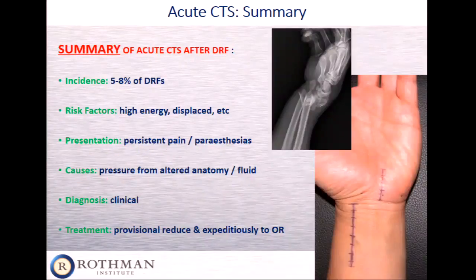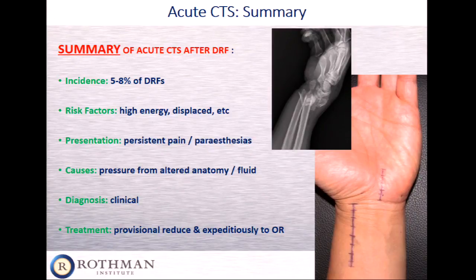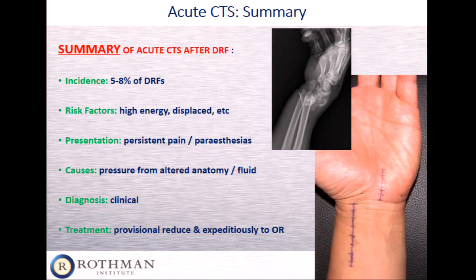In summary: acute carpal tunnel syndrome in the setting of a distal radius fracture has an incidence of about 5% to 8%. Risk factors include higher energy injuries and greater displacement. Presentation is like carpal tunnel syndrome but more painful and more progressive in the same distribution. Causes are ultimately pressure — from wrist position, altered anatomy within the carpal tunnel, or excess fluid. The diagnosis is predominantly clinical, and treatment is provisional reduction if possible, followed by expeditious operative decompression of the nerve.